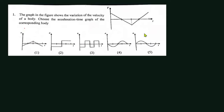I'll teach you a very simple method to work this out. From a VT graph, to go to an AT graph, you have to check the gradient of the VT graph. The gradient of the VT graph gives the acceleration.